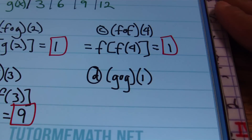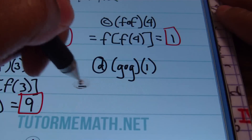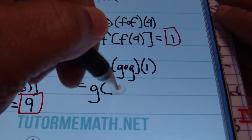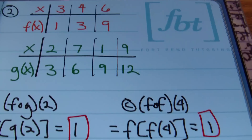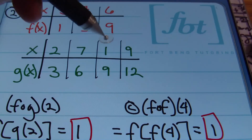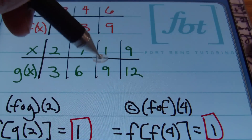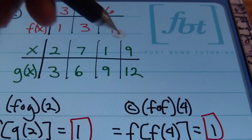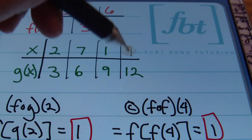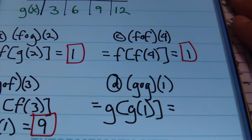In 2D, we have G composite G of 1, which means G of G of 1. Going back to the tables, plugging 1 into G gives a result of 9. Now that we have 9, we plug it back into G as X. Plugging 9 in for X, we end up with a result of 12, which is the answer. So 12 is the result of 2D.